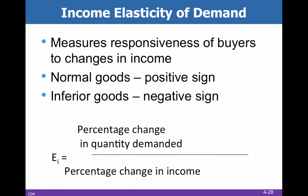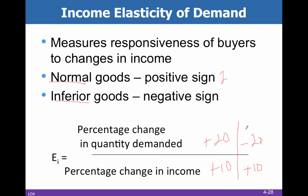The last concept is income elasticity, which is the mathematical way to figure out if a good is normal or inferior. If my income rises by 10% and my purchases of ground beef increase by 20%, then I have a positive 2 — ground beef is a normal good. As I make more money, I buy more ground beef. But if my income goes up 10% and my purchase of spam goes down 20%, that gives me a negative 2.